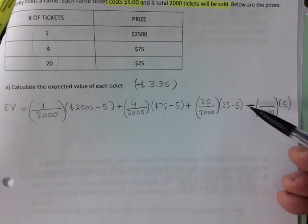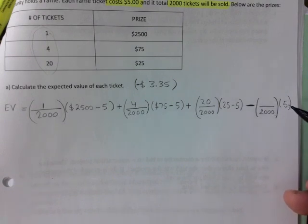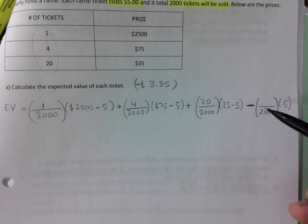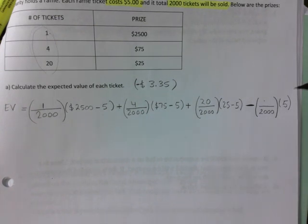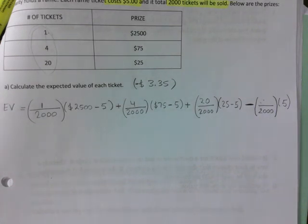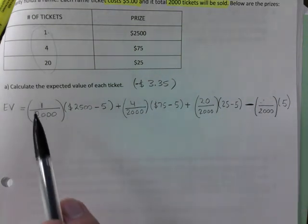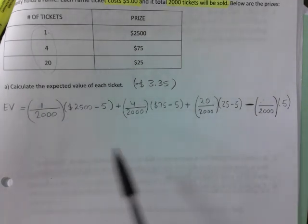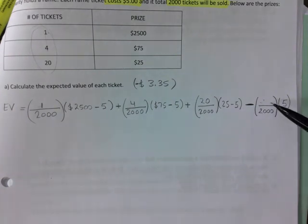So make sure when you lose, you basically lose the five dollars and that's where this negative comes from. What number goes in there? What would you put in there? That is always the kicker right there. If one and four and 20, so 25 tickets win something, so how many tickets don't win anything? Would that help you figure this out?